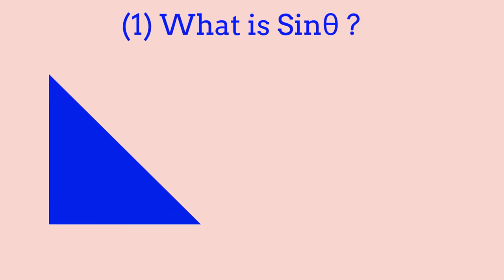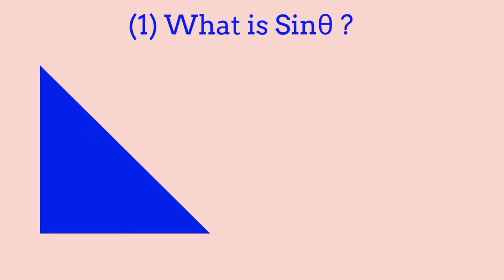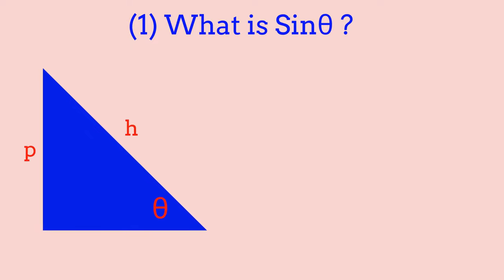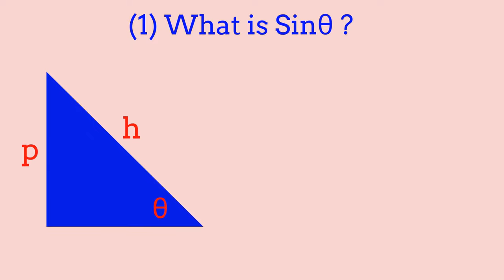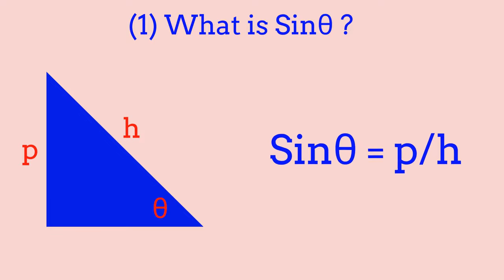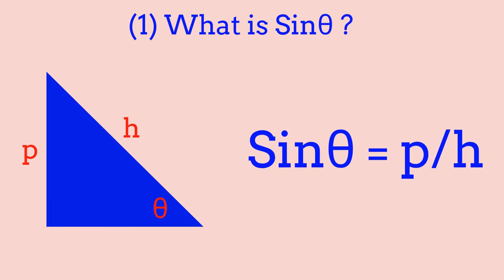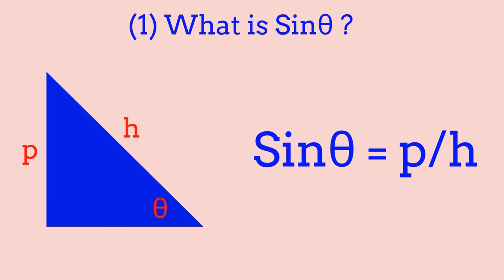To refresh our minds, sin theta is basically P over H, which is perpendicular over hypotenuse. Sin theta is basically the projection from the hypotenuse onto the actual perpendicular or the opposite side.